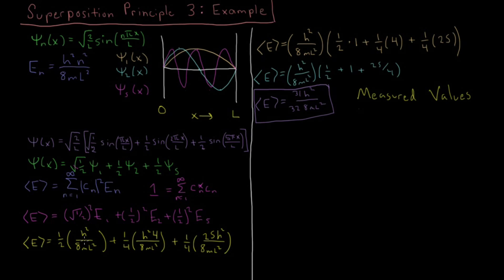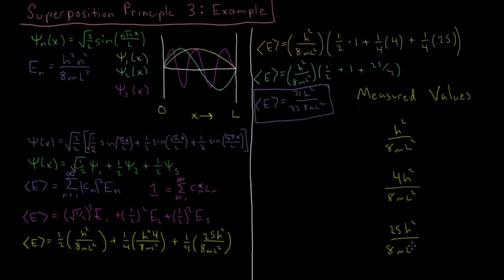We can measure the particle and find it's in state 1, giving energy h²/8ml². We could measure it in state 2, giving energy 4h²/8ml². We can measure the energy of state 5, giving 25h²/8ml². Since this superposition has contributions from states 1, 2, and 5, the energies we can measure are exactly those three energy values.